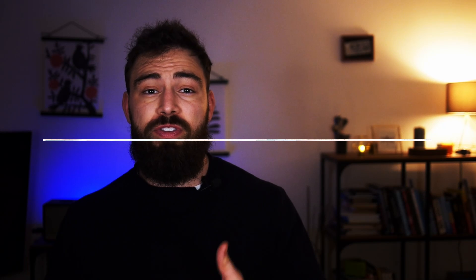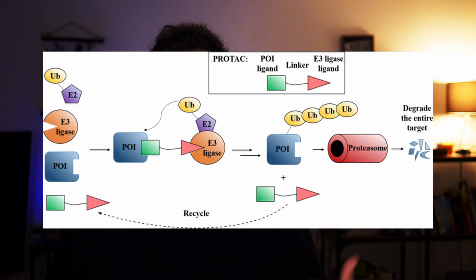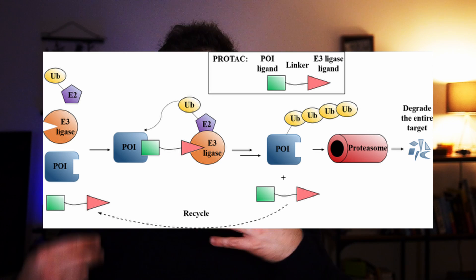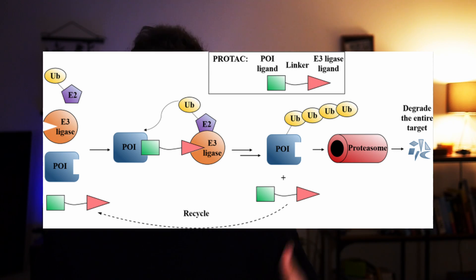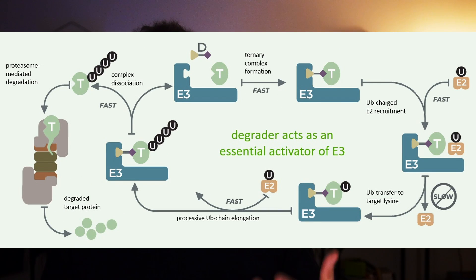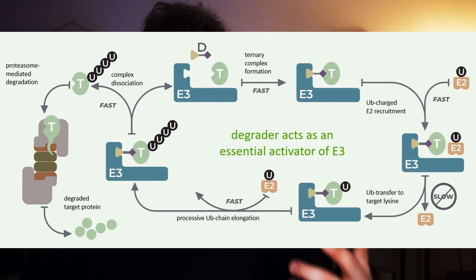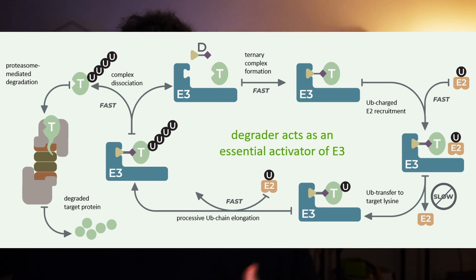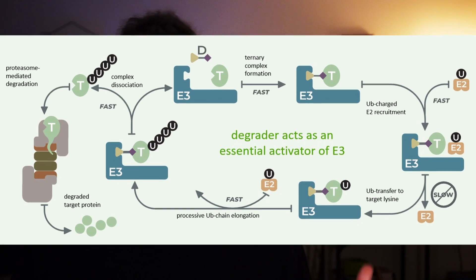GT is a so-called Protag drug. The mechanism of Protag is to use the UPS system to ubiquitinate and degrade the target protein. Once the Protag molecule combines with the target protein and the E3 ligase together to form a ternary complex, which includes the E3 ligase ubiquitinating the target protein to initiate the degradation process. The ubiquitinated target protein is then recognized and degraded by the 26S proteasome, which is part of the eukaryotic cell's UPS.